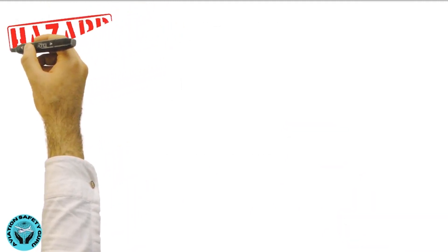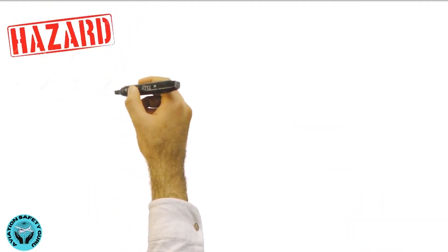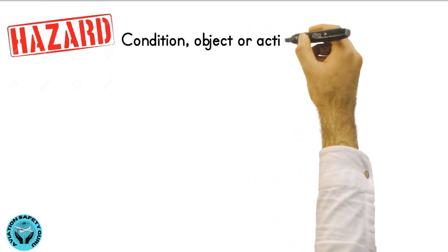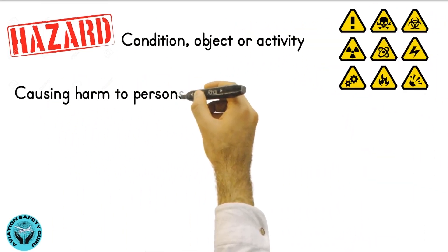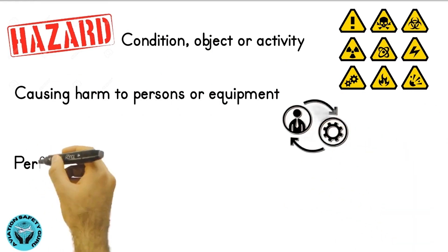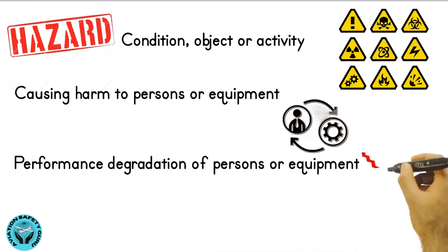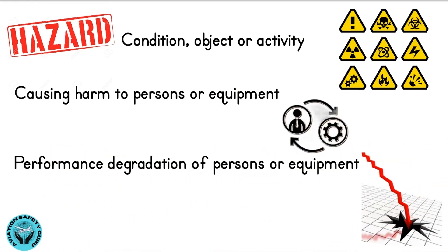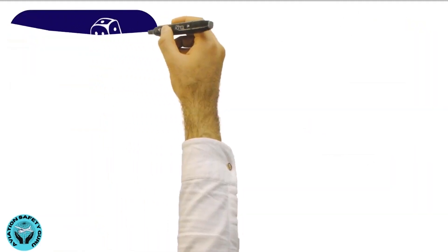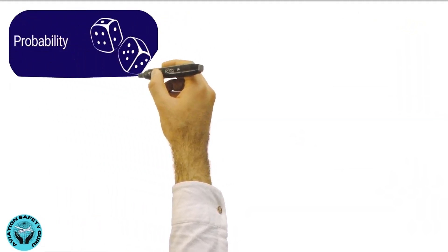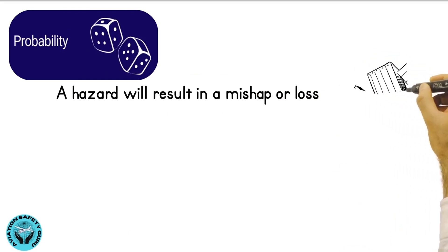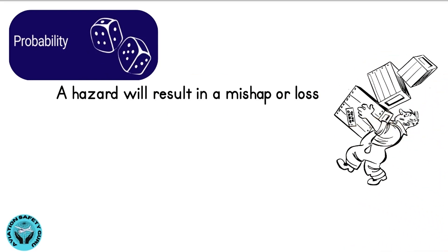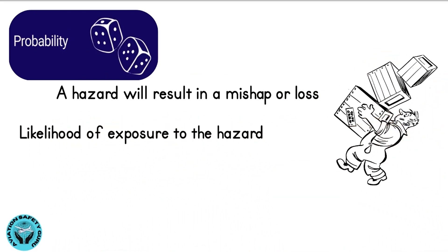Similarly, hazard is defined as a condition, object, or activity with the potential of causing harm to persons or equipment, or performance degradation of persons or equipment. Whereas probability is the likelihood that a hazard will result in a mishap or loss, including the likelihood of exposure to the hazard.